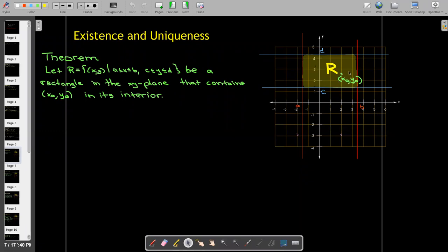And the initial value point, so (x₀, y₀), must be in the interior of the rectangle. It can't be on any of the boundary lines.